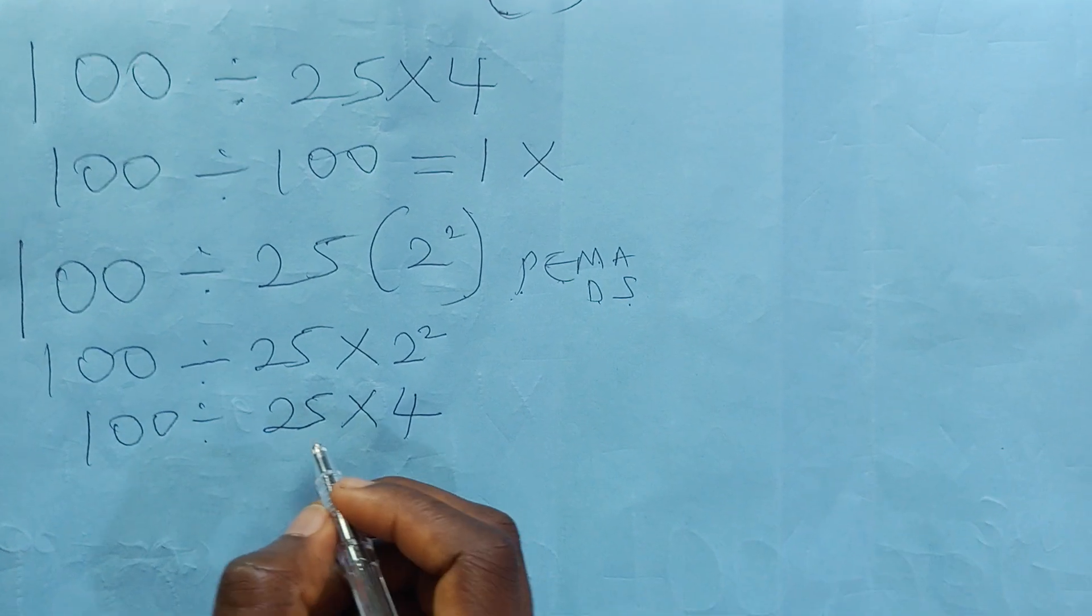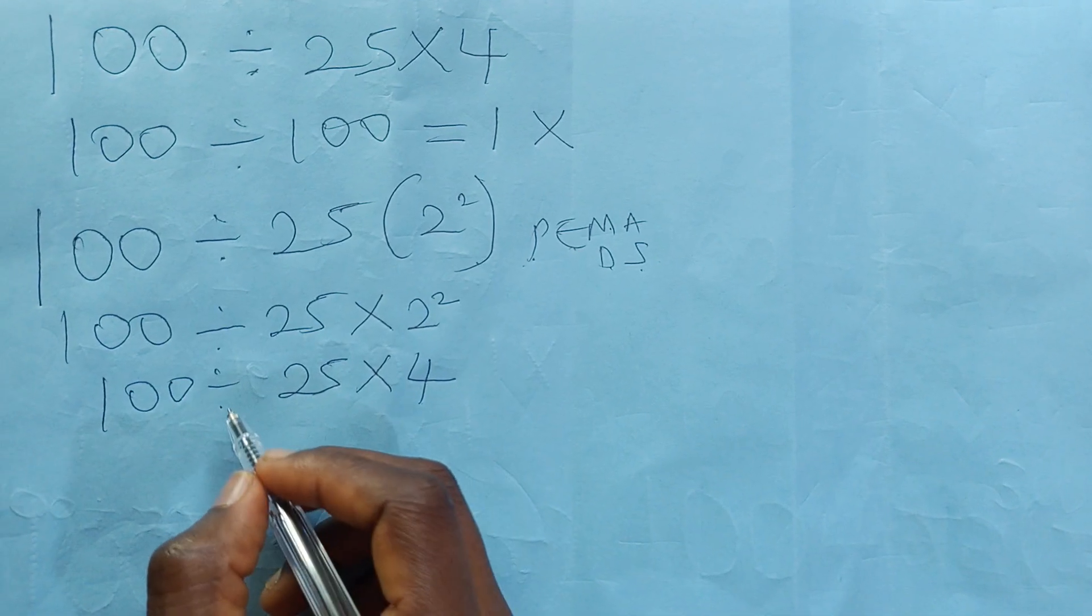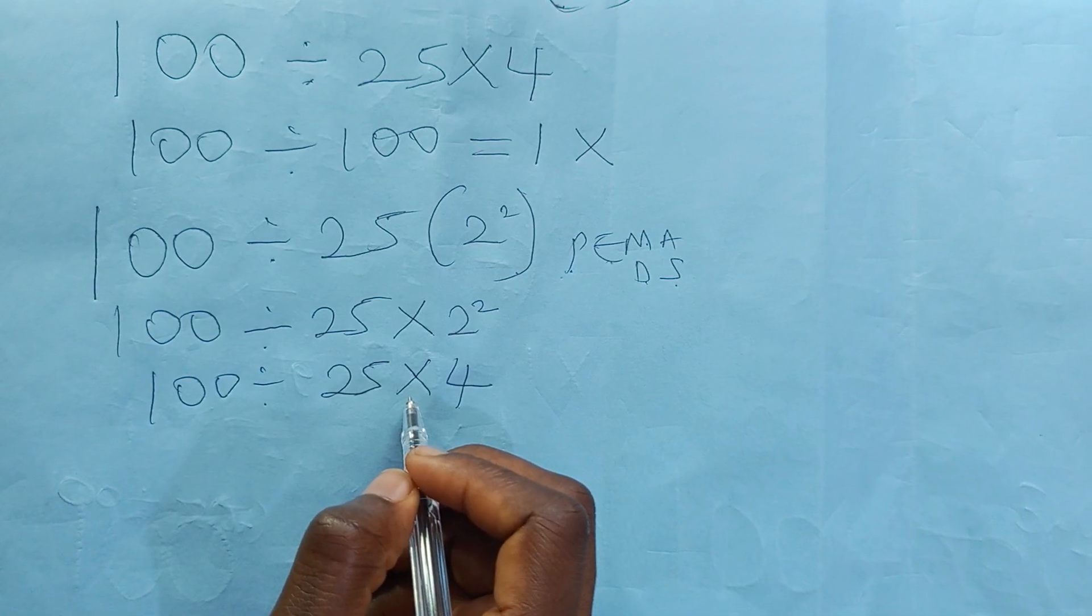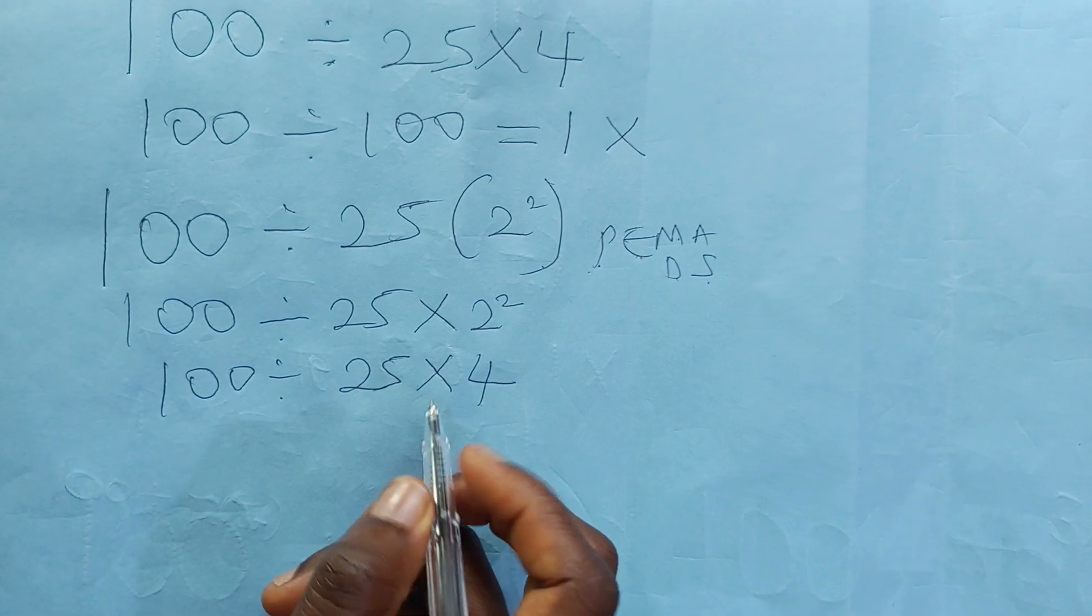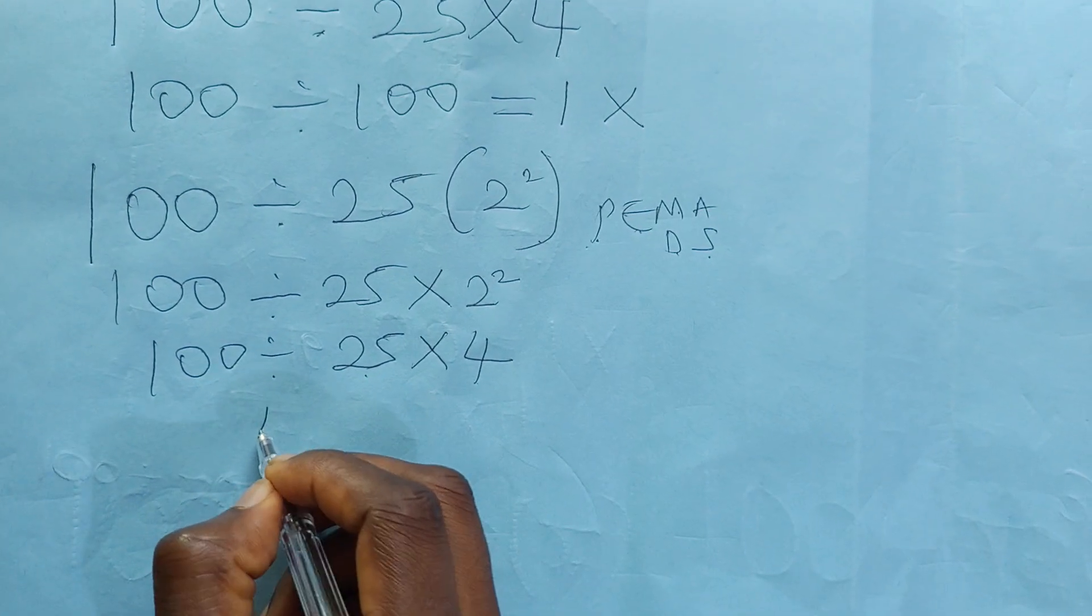100 divided by 25 times 4. Then you must not forget that division and multiplication have equal priority from left to right. So we are solving the division before the multiplication. 100 divided by 25 is 4.